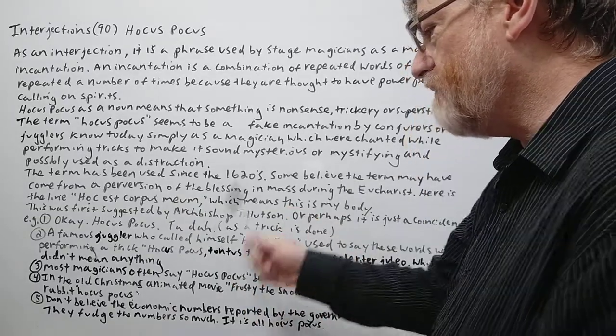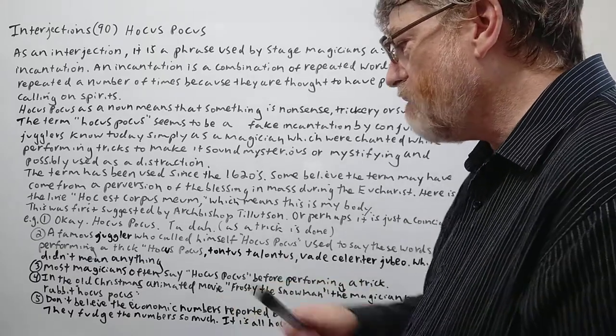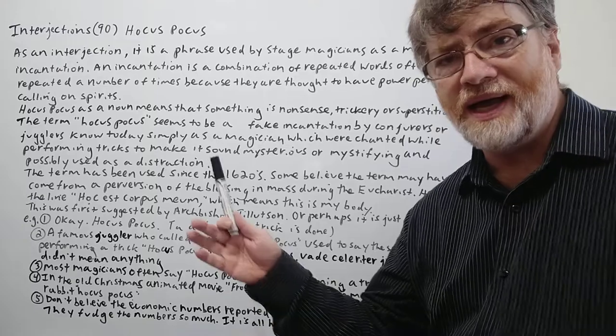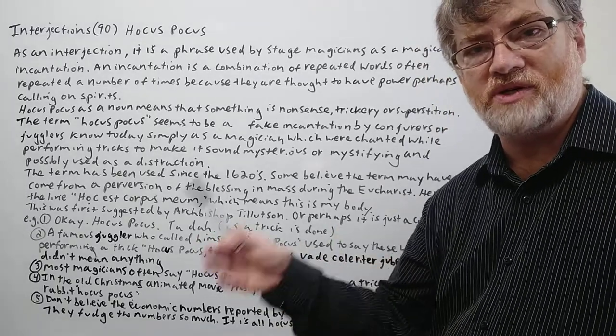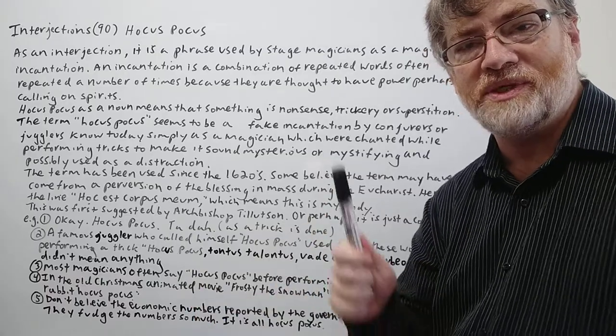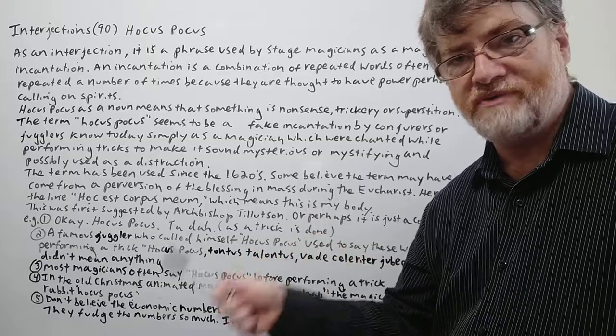Let's continue and we got five examples to show just how we use this. Here's the first one. Hocus pocus, ta da! So this would be as a trick is done. As a magician is doing a trick, he usually says the word hocus pocus before he's about to do the main part of the trick.